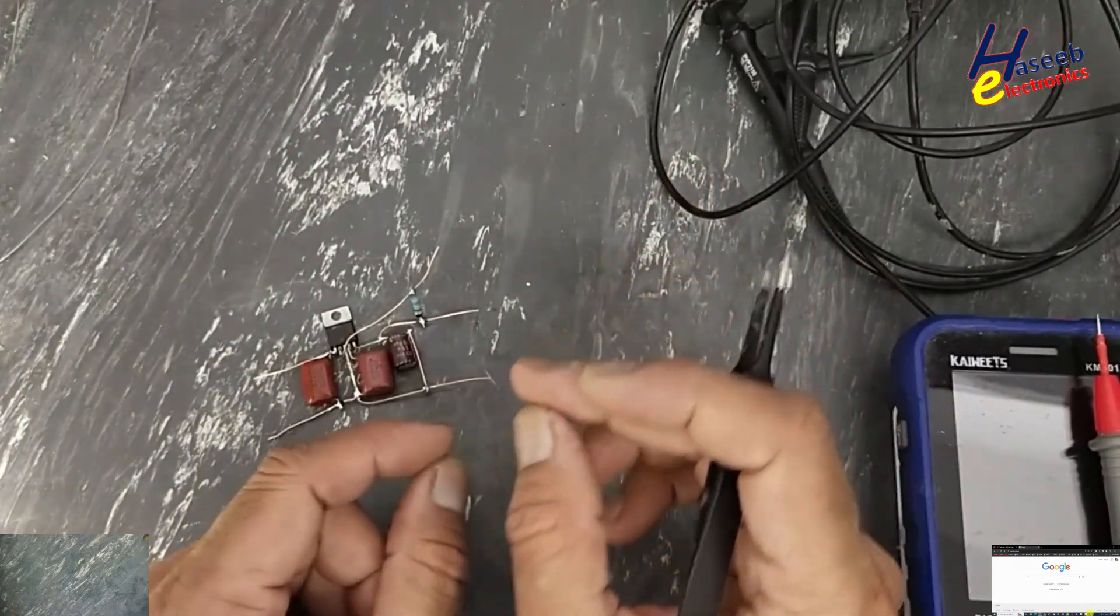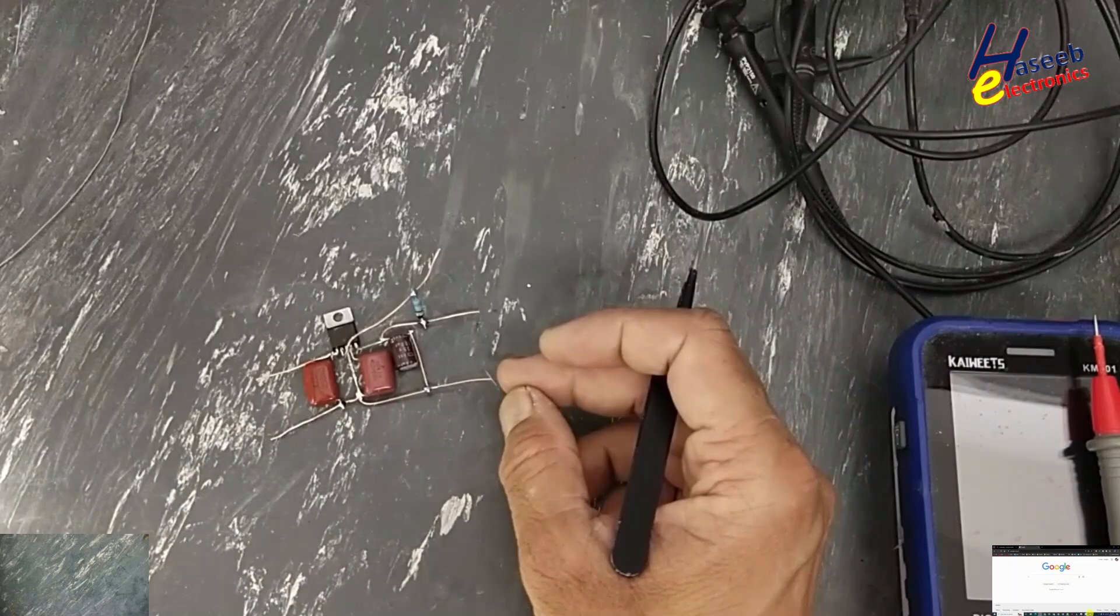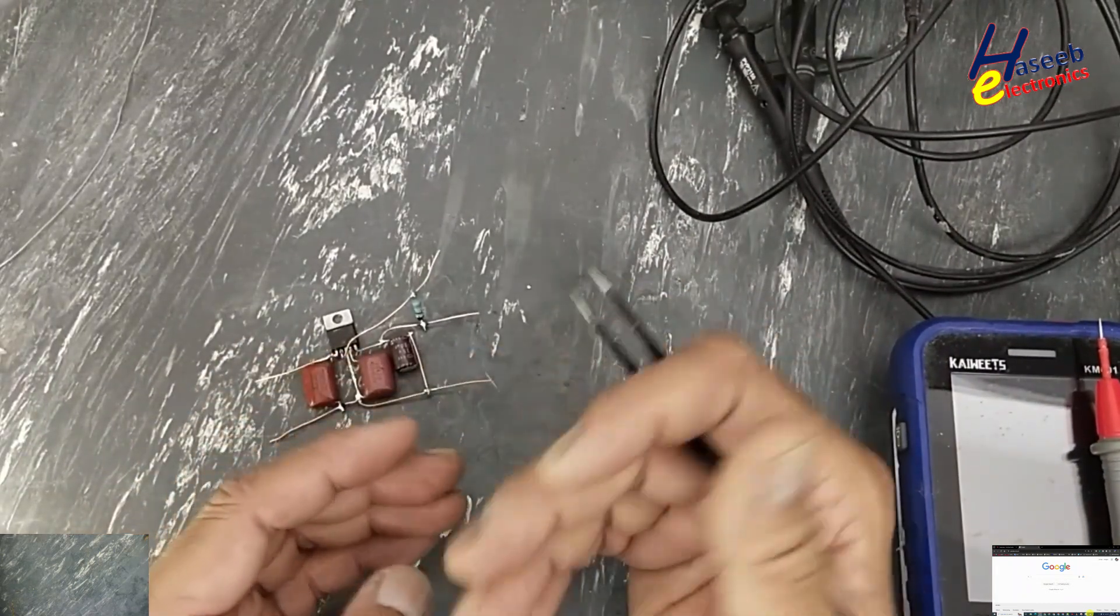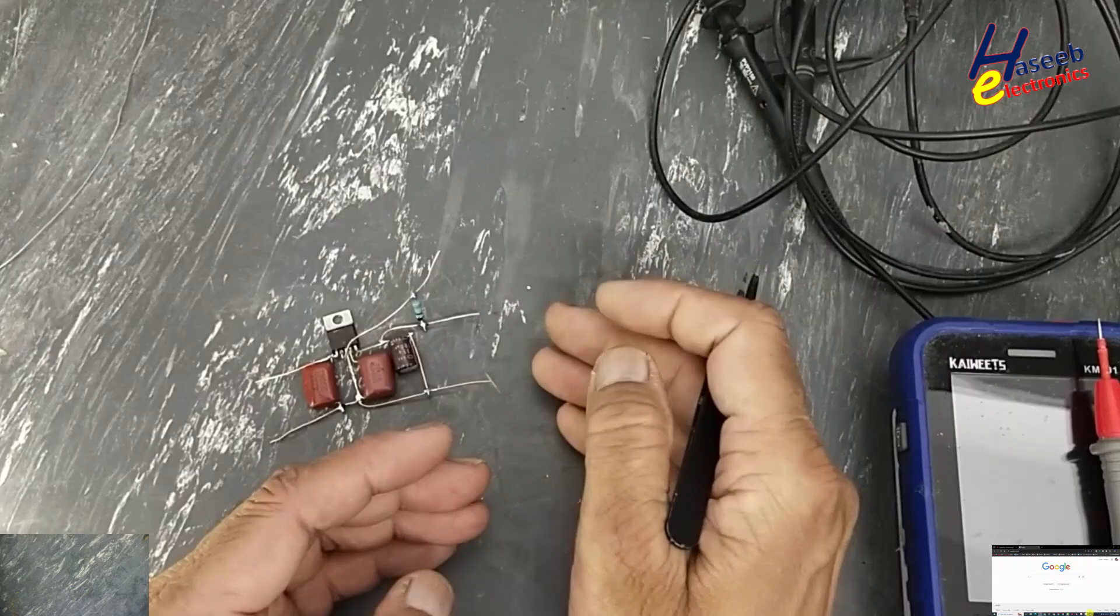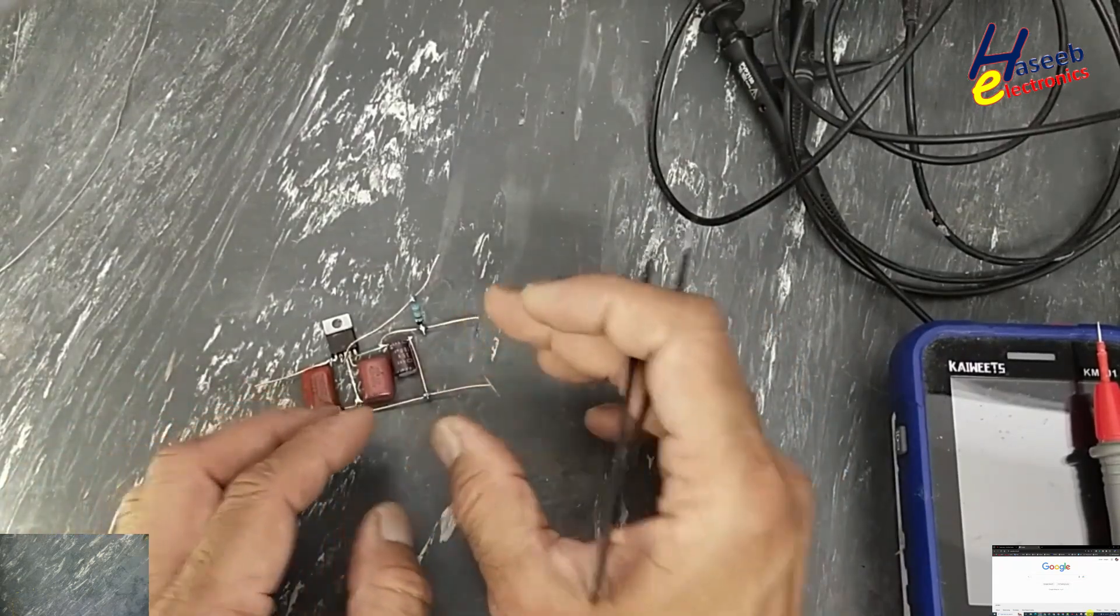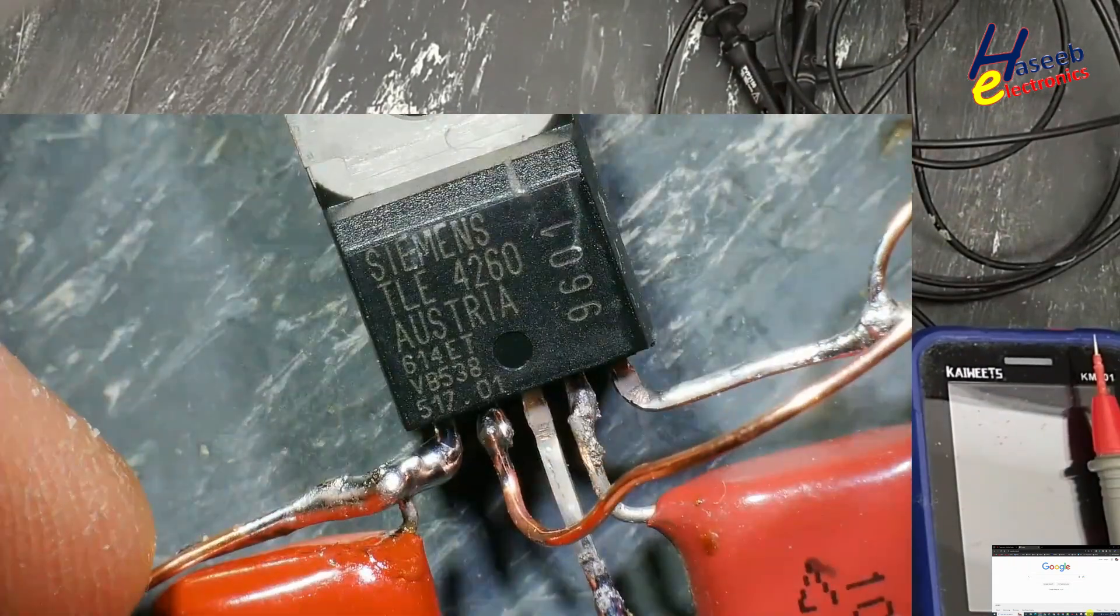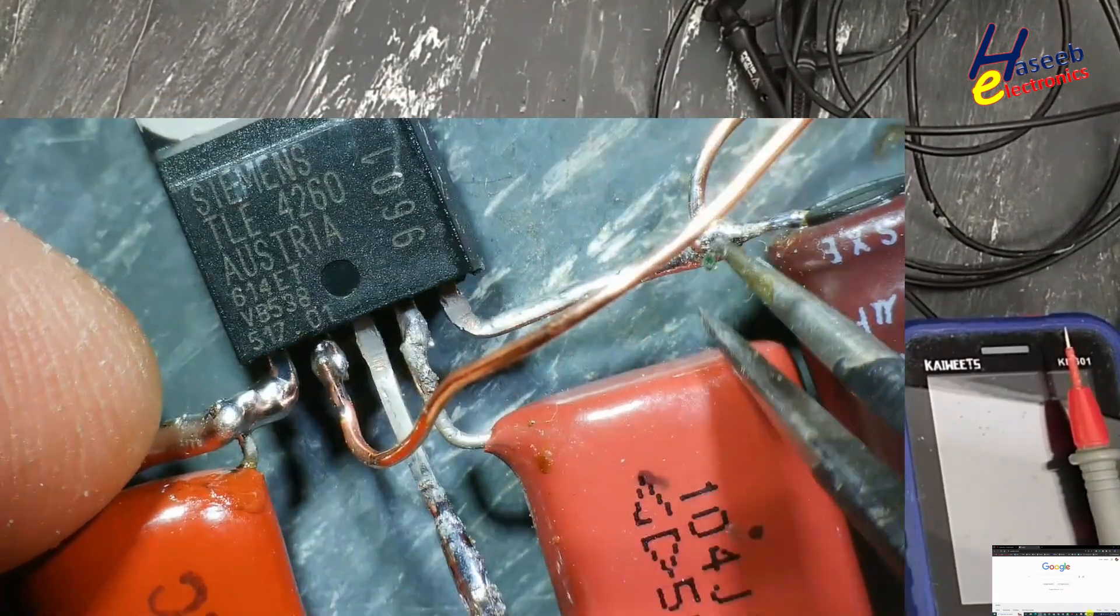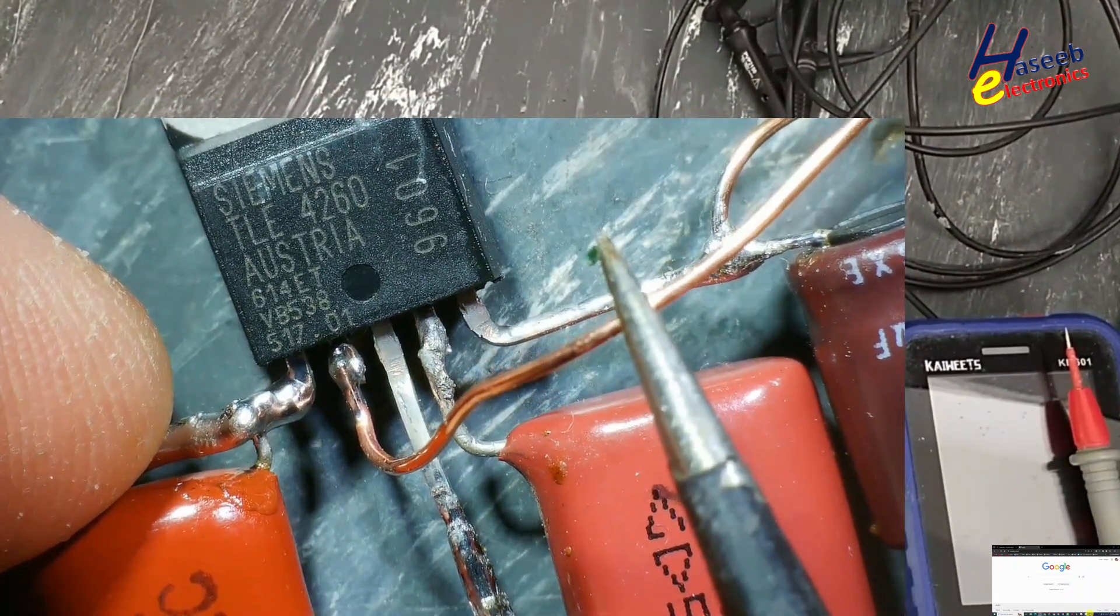In case of under voltage, over voltage, or short circuit, it will protect the processor. So this TLE4260 is an automotive grade regulated 5-volt regulator with reset functionality for processor protection.